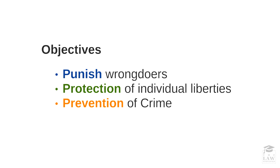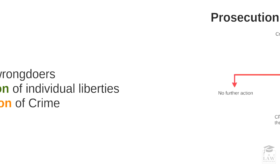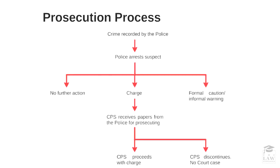Now that we have looked at the various objectives and the models or theories applicable in various jurisdictions, let's focus on the UK's criminal justice process and determine how the prosecution process takes place. At the very outset, a crime will be recorded by the police — a victim makes a complaint, or in some manner the police record the particular crime. From that point, the police will arrest the suspect, at which point there will be either no action taken, a charge, or depending on the type of crime involved, a formal caution or an informal warning.